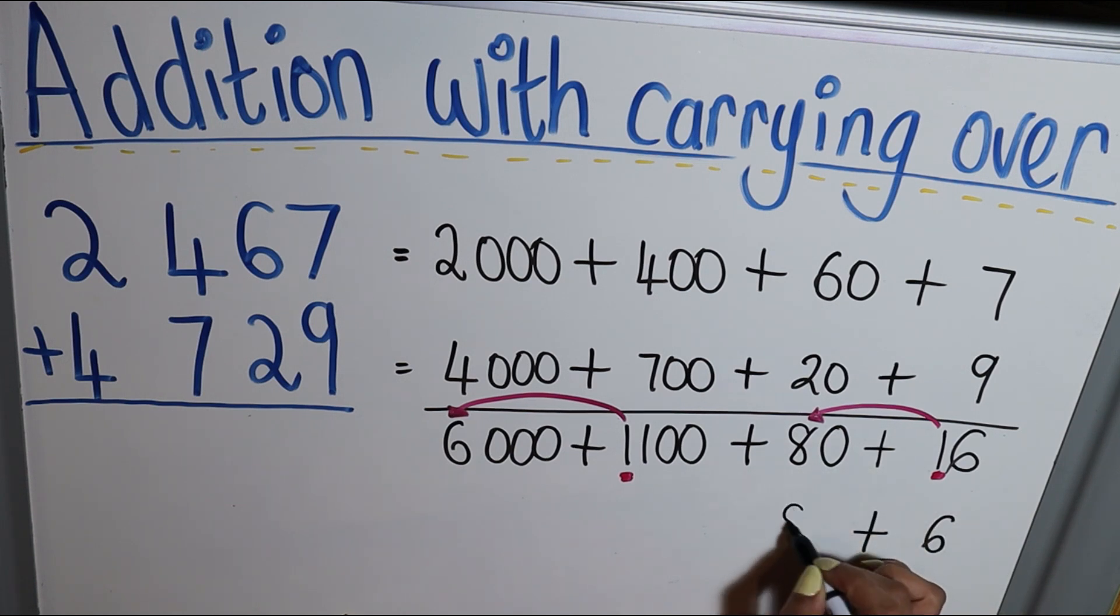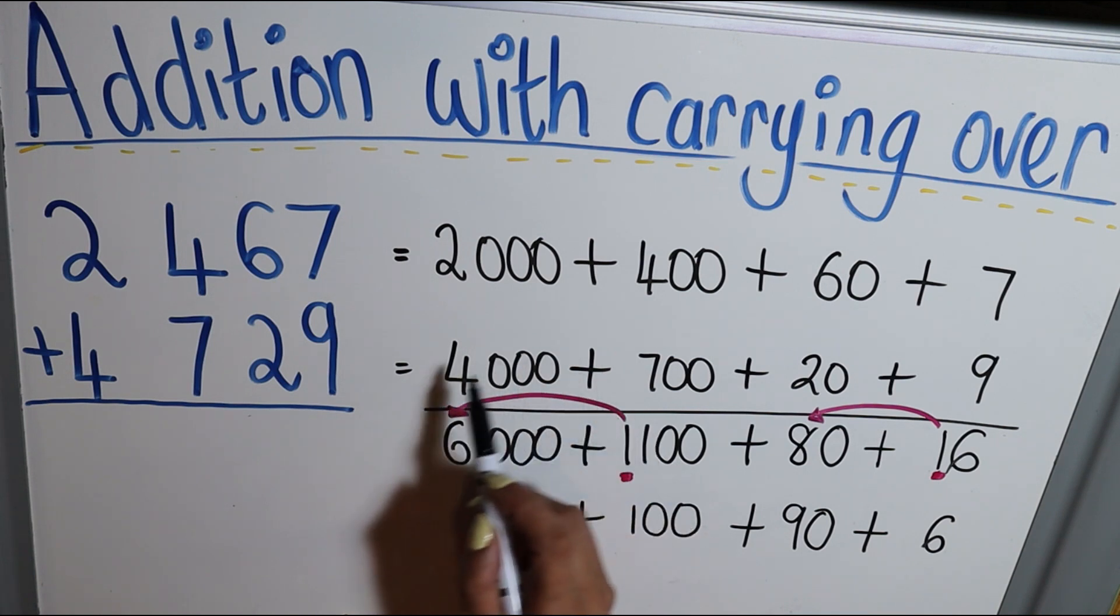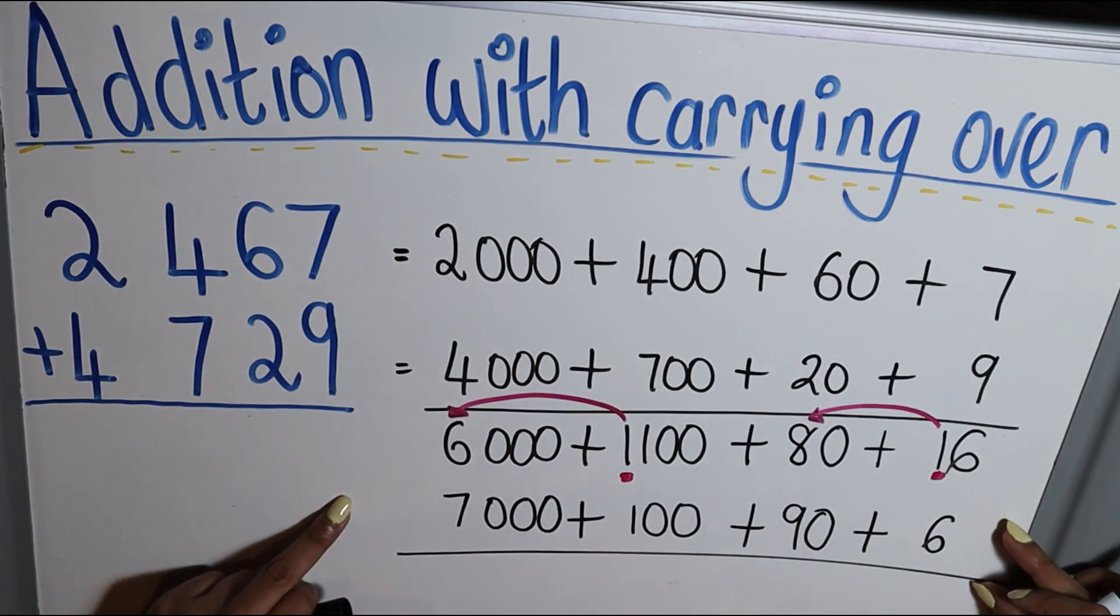In my hundreds column, I have 100, plus that 1000 goes over. I add it to the 6000, it becomes 7000, and that should be my final answer.